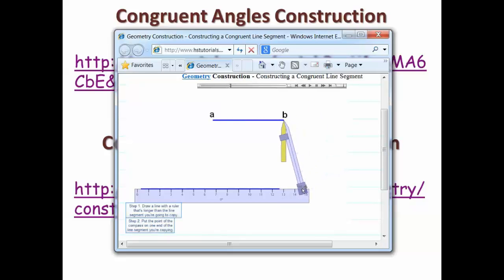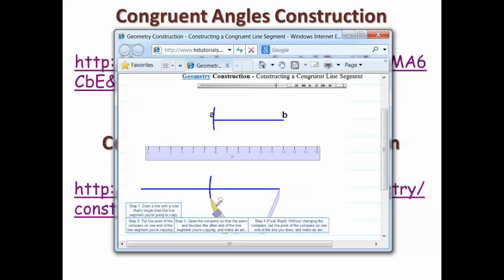Step one: draw a line with a ruler that's longer than the line segment you're going to copy. Step two: put the point of the compass on one end of the line segment you're copying. Step three: open the compass so that the pencil end touches the other end of the line segment you're copying and make an arc. Step four, the final step: without changing the compass, put the point of the compass on one end of the line you drew and make an arc. Here's the line segment A prime B prime that's exactly congruent to line segment AB.